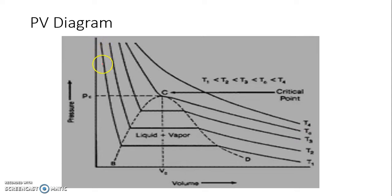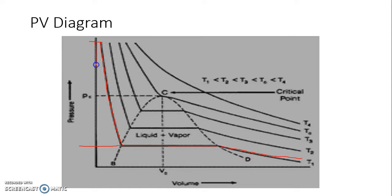For a given temperature, as we decrease the pressure, the volume expands and the fluid also changes phase. Consider one isotherm: in the liquid phase region, liquids are incompressible, so a major change in pressure does not have a big impact on volume. The delta P can be large, but the corresponding delta V is very small — negligible compared to delta P.